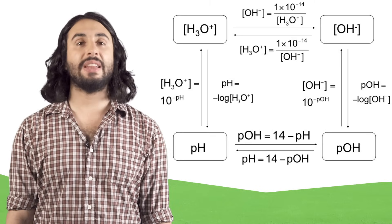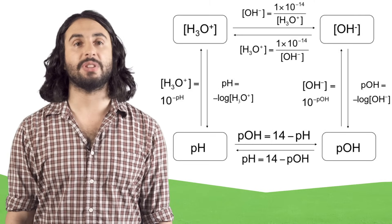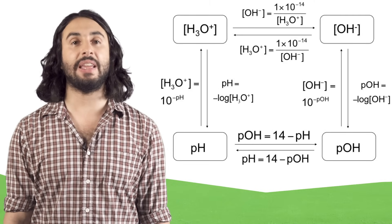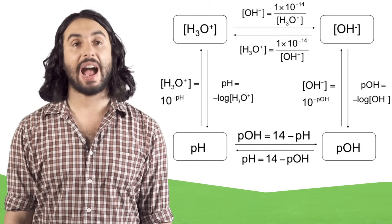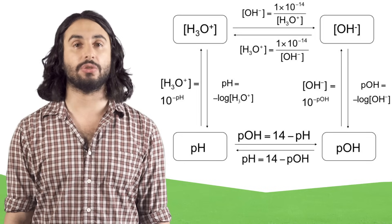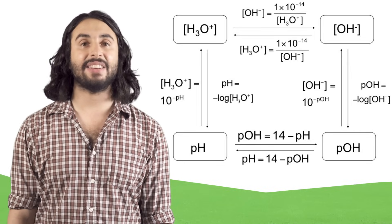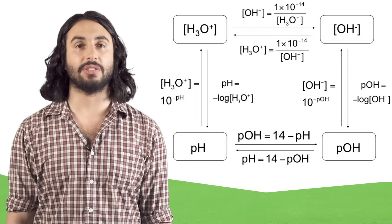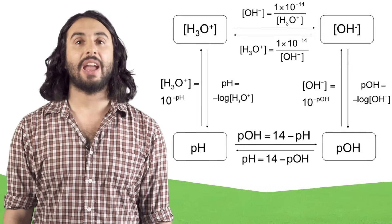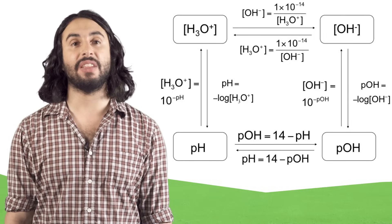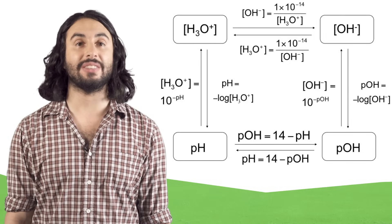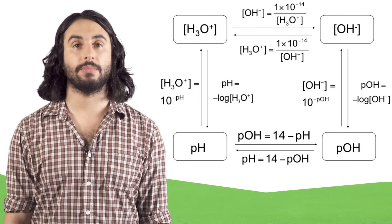Between these relationships we can relate pH, pOH, hydronium concentration, and hydroxide concentration, and we should be able to get from one to any of the others using this chart.